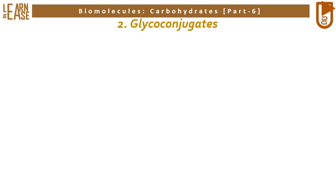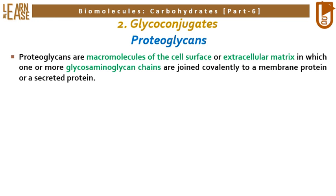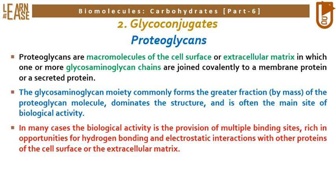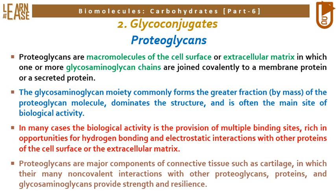The second family of heteropolysaccharides is glycoconjugates, the first subtype being proteoglycans. Proteoglycans are macromolecules of the cell surface or extracellular matrix in which one or more glycosaminoglycan chains are joined covalently to a membrane protein or a secreted protein. The glycosaminoglycan moiety commonly forms the greater fraction by mass, dominates the structure, and is often the main site of biological activity — providing multiple binding sites rich in hydrogen bonding and electrostatic interactions. Proteoglycans are major components of connective tissue such as cartilage, providing strength and resilience.